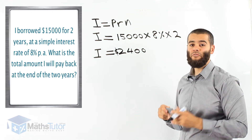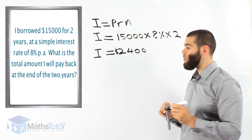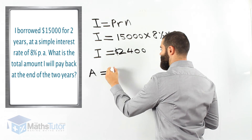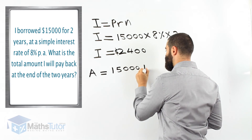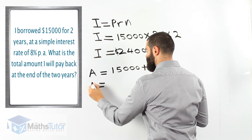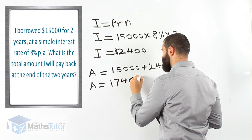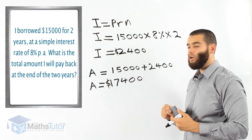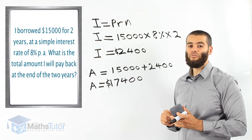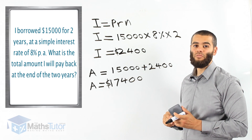So this person is going to pay back $15,000 plus interest on top of $2,400. Altogether, the total amount is $15,000 plus $2,400, which equals $17,400 paid back in total — $15,000 amount borrowed plus the interest, giving $17,400 in total paid back for this loan over two years at 8% per annum.